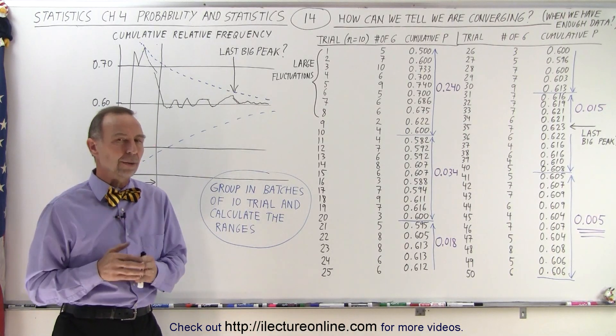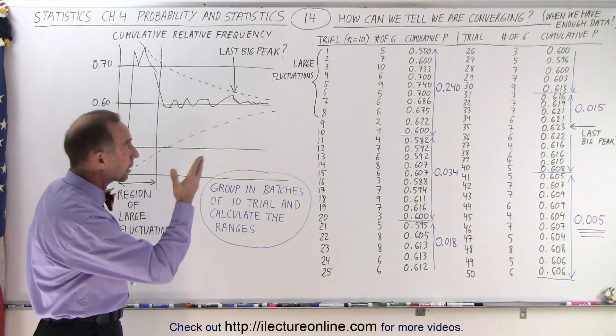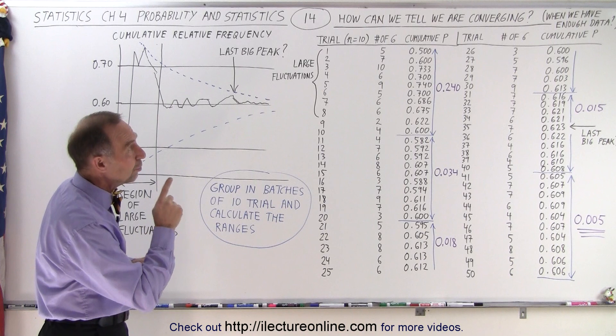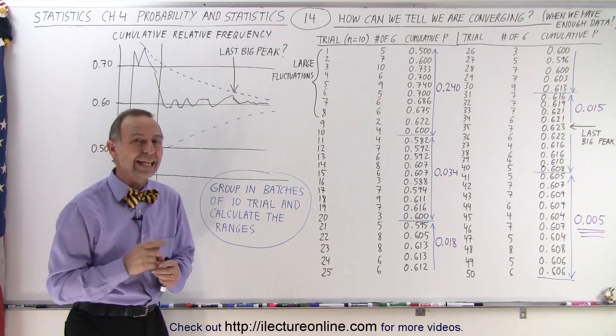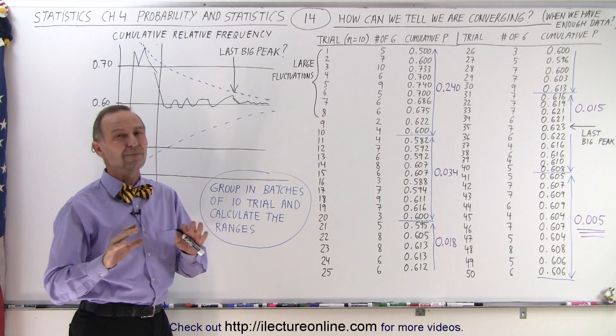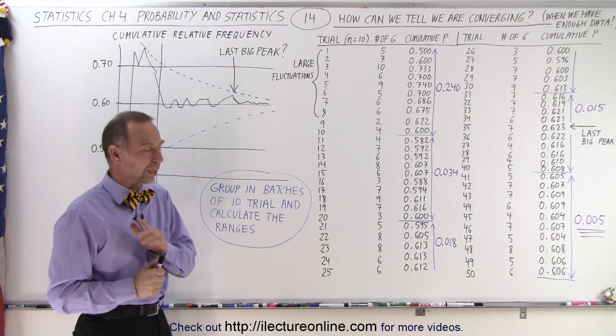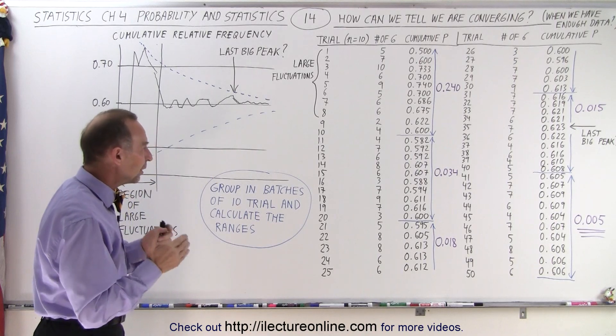But how do we know that we've converged to the correct number? That's really the key. How can we tell we're converging? When do we have enough data to work with so we can make reasonable conclusions? This is misused in so many places, so this is actually very important.